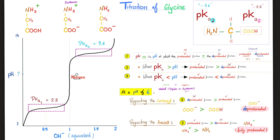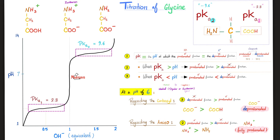At pH 6, which is greater than 2.3 but lower than 9.6: for the carboxyl side, pH exceeds pKa so COO⁻ wins (deprotonated). For the amino side, pKa of 9.6 exceeds pH of 6, so the protonated form NH3⁺ wins. Therefore at pH 6, glycine exists as a zwitterion — one side negative, the other positive.